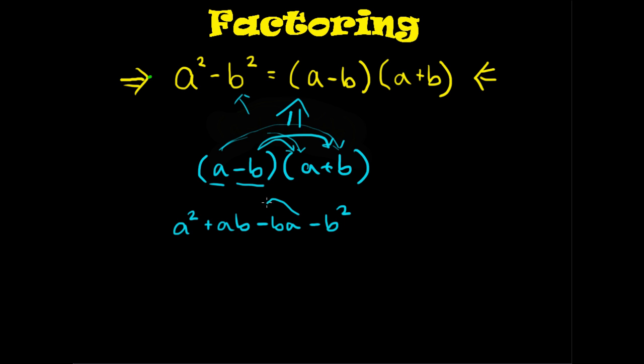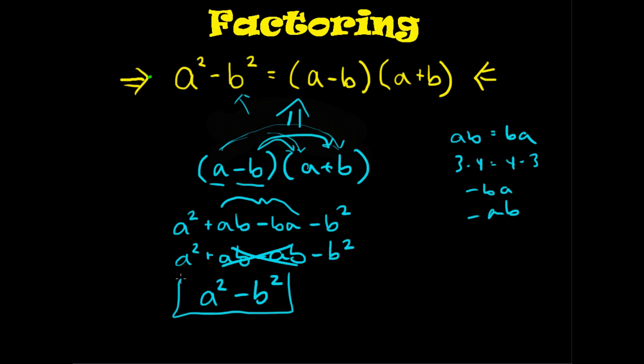Now combine like terms, and remember ab is equal to ba, just like 3 times 4 is equal to 4 times 3. So instead of writing it as negative ba, we could write it as negative ab. a squared plus ab minus ab minus b squared. Notice the middle terms here cancel out, and you're left with a squared minus b squared. So the identity is verified.